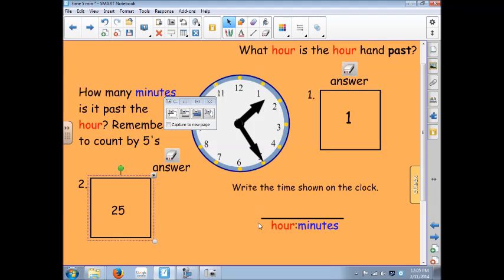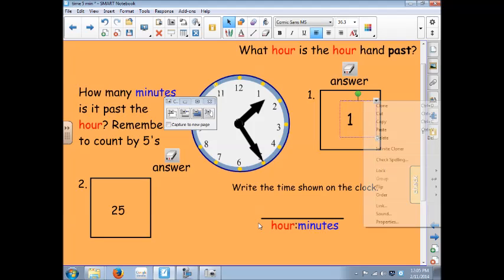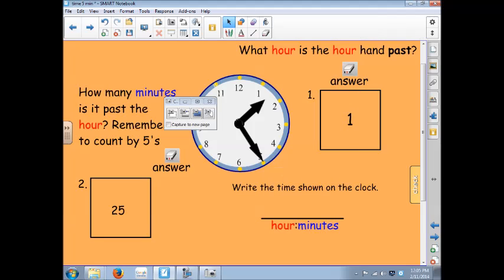That way when I color over the answer with the same color as the background, the lines of the box will still show. I'll show you that right now. I have my answer so I'm going to lock that down separately. I have my box.